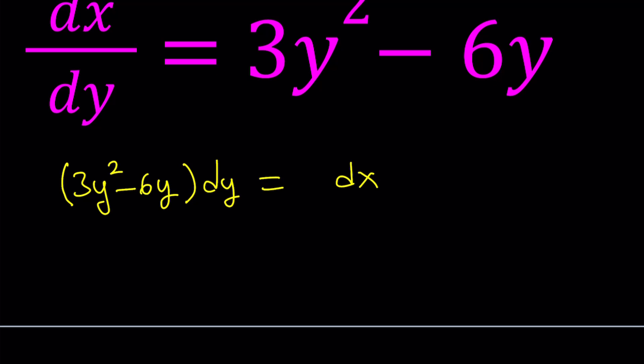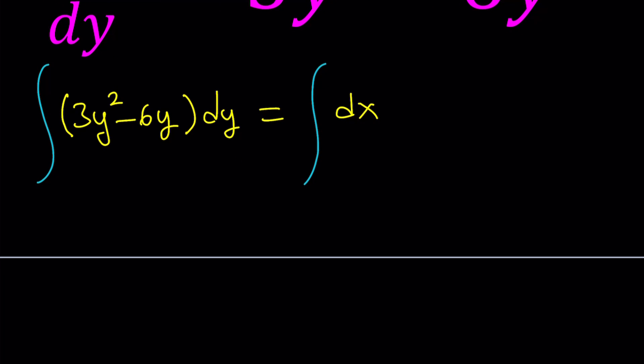Now let's go ahead and integrate both sides at this point, since this is separable. If you integrate 3y squared, you're going to get y cubed, and 6y, if you integrate that, you're going to get 3y squared. Let's keep the constant on the right-hand side. If you integrate dx, you're going to get x, and then let's just add a constant.